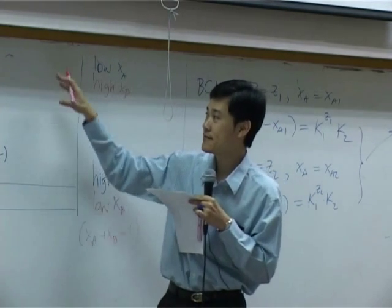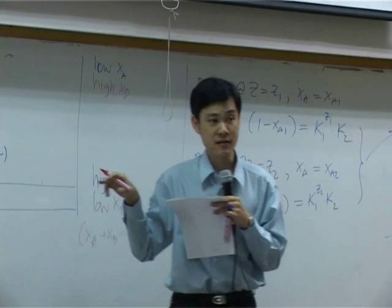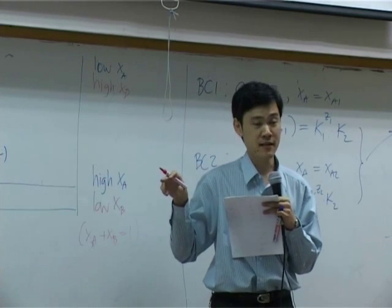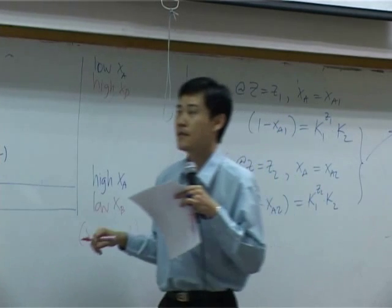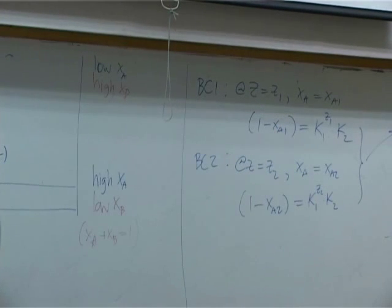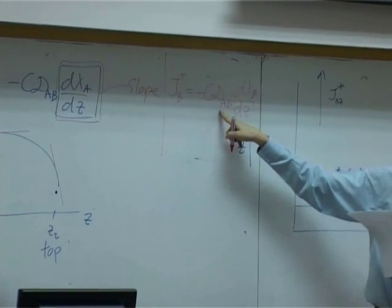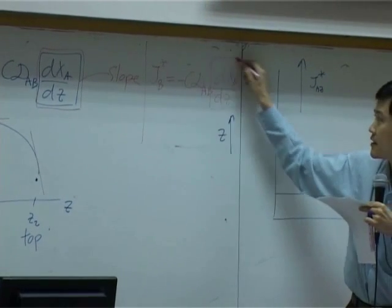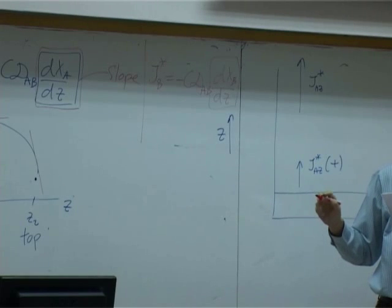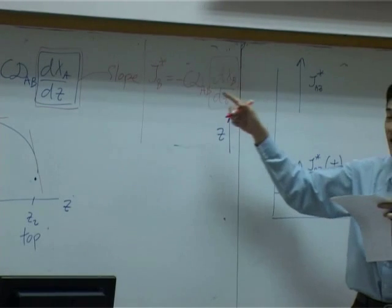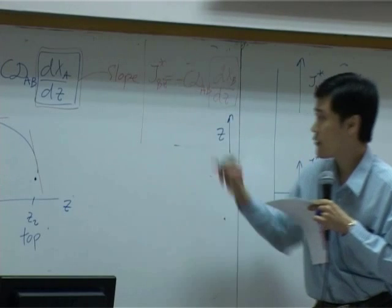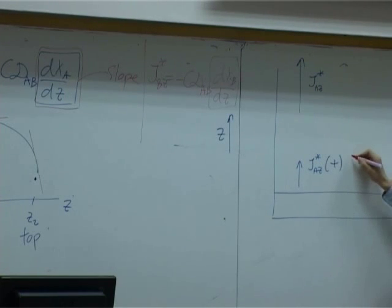Is J_B* constant? Similarly, J_B* equals minus C·D_AB·(dX_B/dZ). C is constant, but the differentiation term is not. So J_B* in the Z direction is not constant, but it is going downward (negative direction).